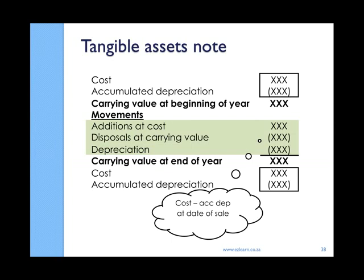We then need to consider the movements, in other words how everything changed. Given the fact that our beginning and end balances are at carrying value, we will also need to show all our movements at carrying value. Additions are shown at cost simply because the carrying value is the cost. There's no depreciation when you buy the item.